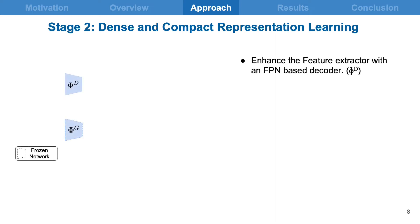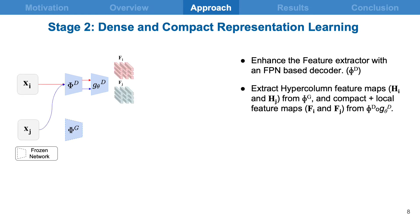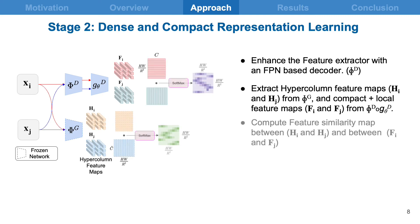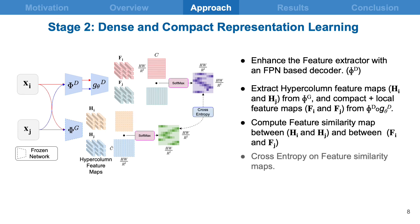Since the hypercolumn representation is very high dimensional, we seek to learn a dense and compact representation that can exhibit the same property. We enhance the feature extractor obtained in stage 1 with an FPN-based decoder followed by a projector network G. We take two different images and obtain their dense and compact features F, then obtain their respective hypercolumn feature maps. Feature maps are reshaped into matrices and their feature similarity distribution is obtained by cosine similarity followed by softmax. We use cross-entropy to match their distributions.